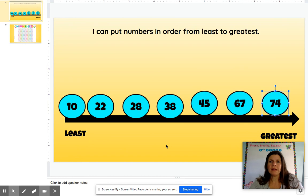And this is one way you might use to order numbers. So now we know 10, then 22, 28, 38, 45, 67, 74. So now you are going to try in your seesaw activity and order the numbers there from least to greatest.